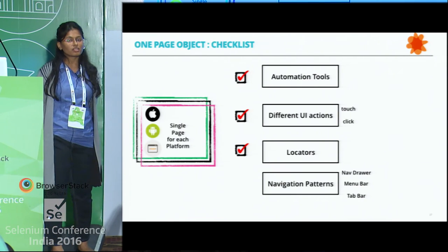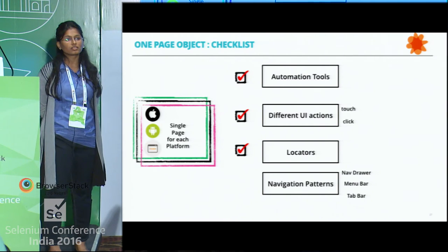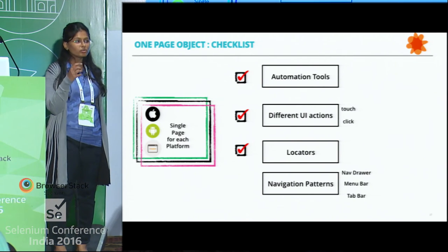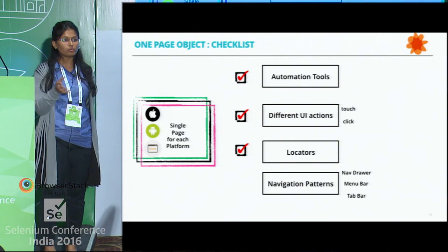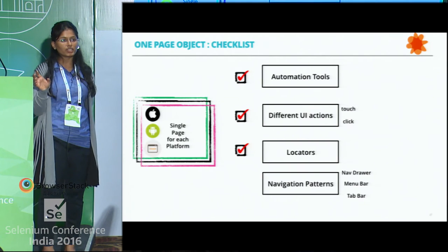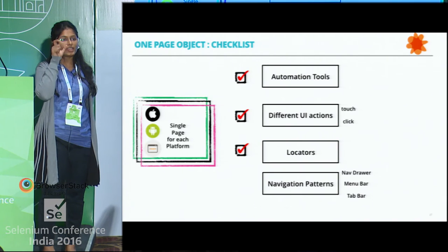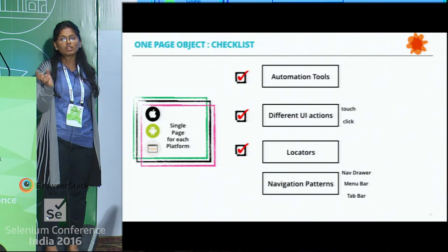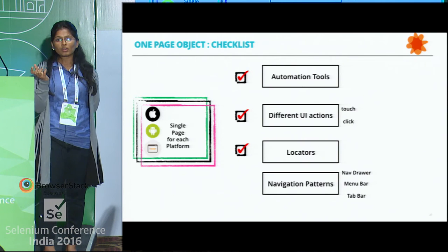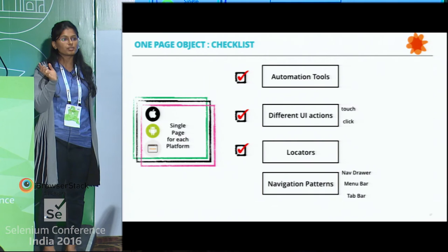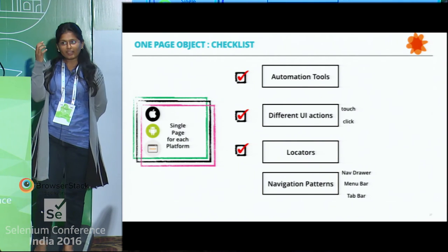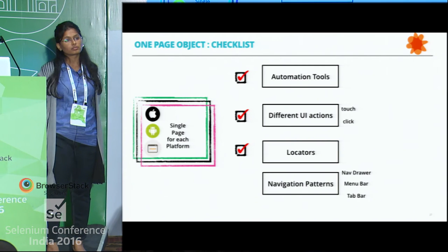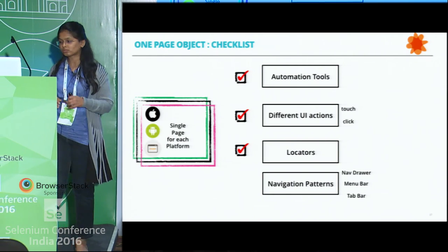If it's my login page, what service will it have? It will be a login method that looks like: username.enter_username, password.enter_password, submit_button.click. I will not repeat this code in three different pages. Instead I define a wrapper over the existing automation tool — for example 'enter text' — which knows how to perform that action whether it's Android, iOS, or web. I have to write that platform-specific code once, but only at one place. I will not repeat it at the page level.